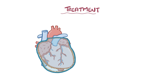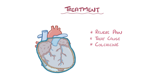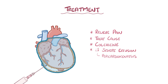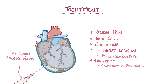In terms of treatment, the main goal is to relieve pain with analgesic medication and to treat the underlying cause of inflammation. Colchicine, a medication that inhibits neutrophil migration, is also used to decrease the likelihood of recurrent pericarditis. If there's a severe pericardial effusion, a pericardiocentesis can be done by inserting a needle into the pericardial cavity and draining the excess fluid. Constrictive pericarditis may require pericardiectomy, which is surgical removal of the pericardium.